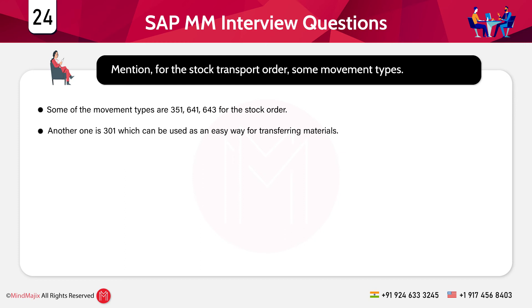The next question is: mention some movement types for a stock transport order. Some movement types are 351, 641, and 643 for the stock transport order. Movement type 301 can be used as an easy way for transferring materials.